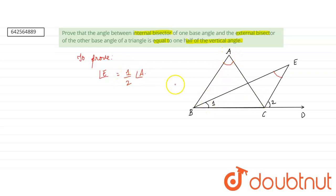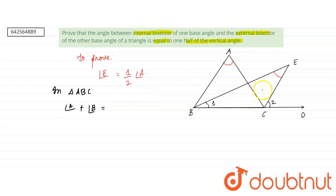In triangle ABC, using the exterior angle property of a triangle: angle A plus angle B equals the exterior angle ACD. So angle A plus angle B equals angle ACD.